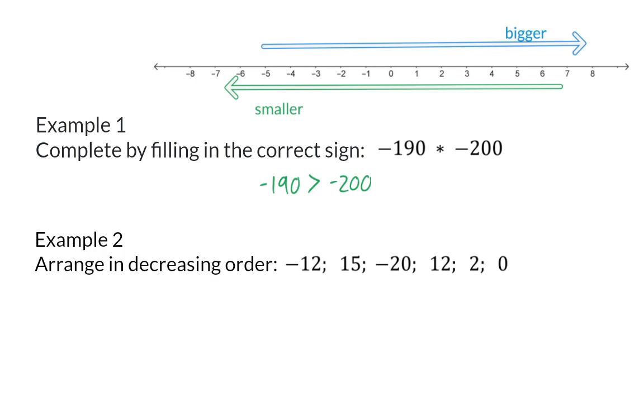Example two, arrange in decreasing order. I would advise you to first separate the negative from the positive values in this group. It is also important to realize that you are asked to arrange in descending order, which means from biggest to smallest, and in essence then from right to left on our number line.